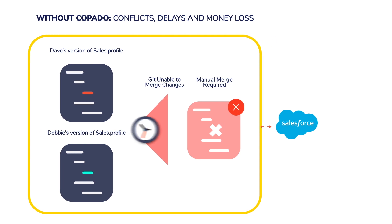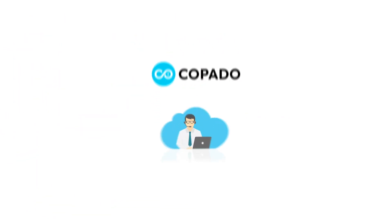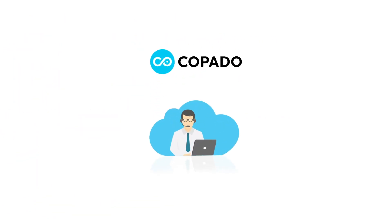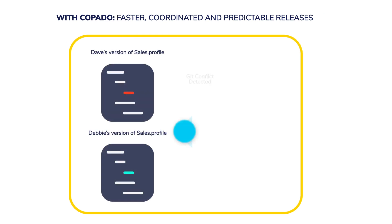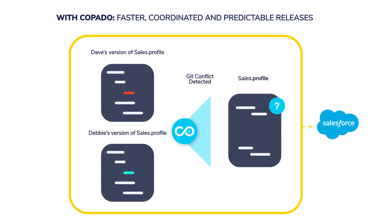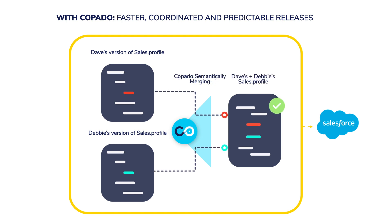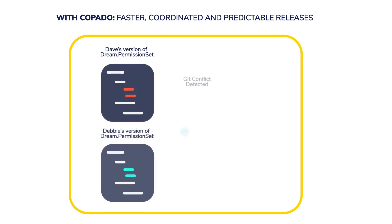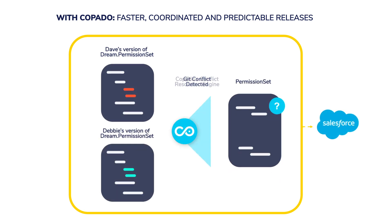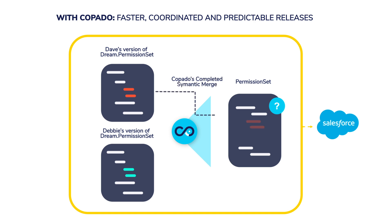So Rob has asked for help, and he has been introduced to Capato. Capato has an automatic conflict resolution engine that resolves conflicts for components such as profiles, permission sets, and even custom objects. Capato's deep understanding of Salesforce's components allows it to analyze the conflicting files and automatically resolve the conflict by merging the contribution of all into a new version of the component in the promotion branch.